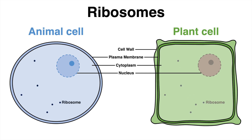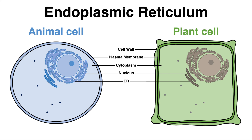Ribosomes are also present in both cell types and have the function of translating mRNA into proteins. The membrane of the nucleus is connected to the membrane of another organelle: the endoplasmic reticulum, abbreviated ER, also found in animal and plant cells. There are two types of ER. The rough ER has a granular structure because it is partly coated with ribosomes — here protein synthesis, modification, and preparation for transport take place. At the smooth ER, a main function is the synthesis of lipids and, in some cell types, also steroid hormone synthesis.